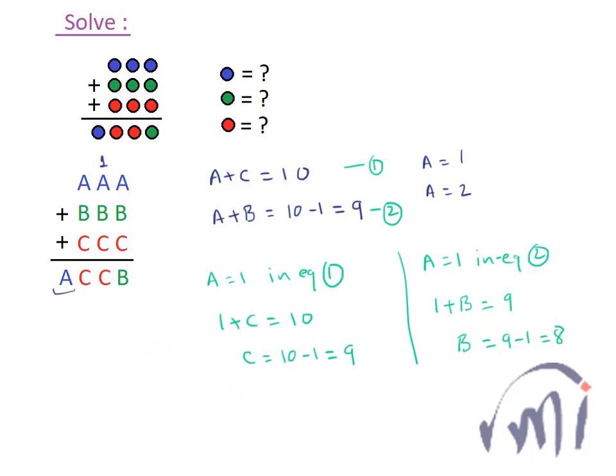So if I substitute the value of A as 1, B as 8 and C as 9, let me see what I get. So this problem can be written as 111 plus B is equal to 8, so 888 and C we found as 9. So third number will be 999 and if I add,